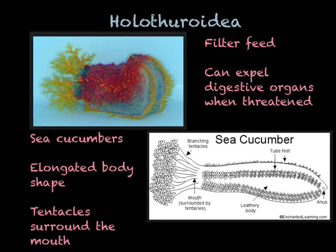Sea cucumbers are in class Holothuroidea, and they can take many different shapes. All their bodies are elongated, and they have tentacles that surround their mouth — some used to filter the water, and some used to shovel sand into their mouths. They have a unique defense mechanism in which they can actually expel their digestive organs when threatened, and then regenerate those digestive organs. It takes a few days, so they have to hide, and it's pretty stressful for the animal.